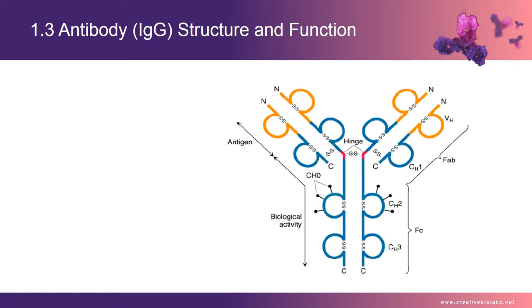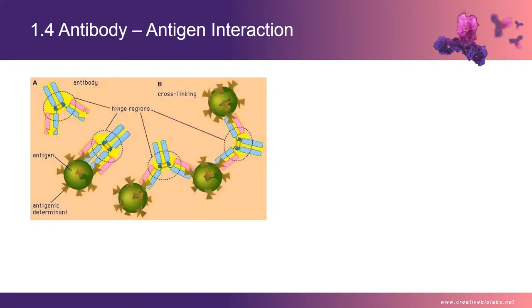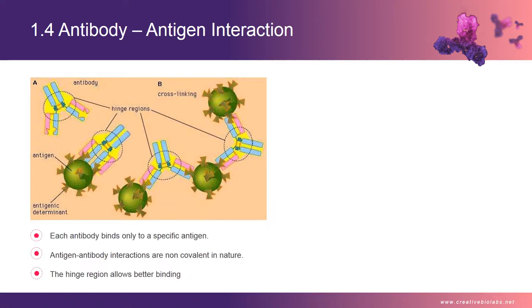There are two domains in IgG: the variable domain, which contains the antigen binding region, and the constant domain, which contains the Fc region, mainly mediating immune response such as ADCP and ADCC. When an antigen enters the body, the primary objective is to remove or destroy it, which is done by our immune system, mostly mediated with the help of antibody binding. The antibody should bind to the antigen specifically but non-covalently, so as to make a temporary immune complex and wait for other effector immune cells to take action against that antigen.